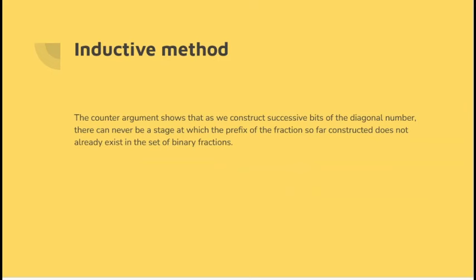The extension to longer binary fractions should be obvious. Now, the counter-argument is to show that as we construct successive bits of the binary of the diagonal number, there will never exist a stage at which the prefix of the binary fraction so far constructed doesn't already exist in our table. So his argument must be false. It's obvious in the first case. We toggle bit 0 and we get 1, which was already in the table.